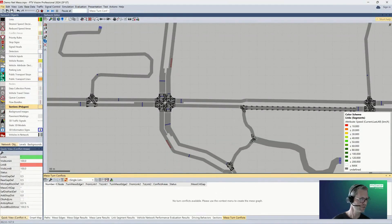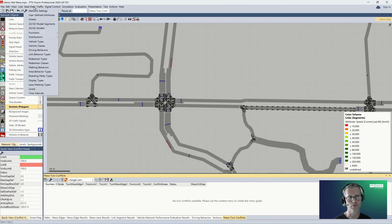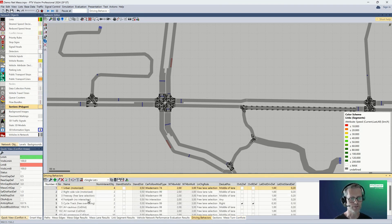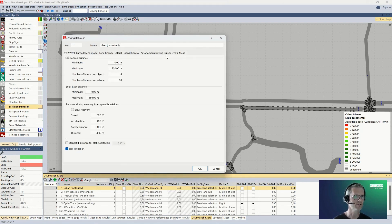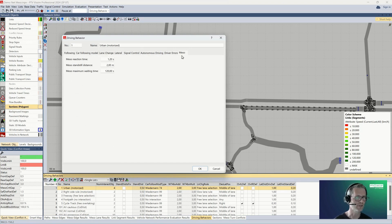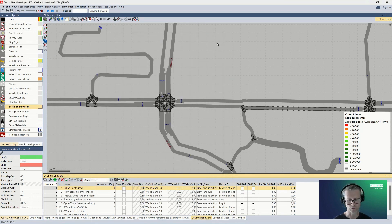Let me switch into VISSIM quickly and show you the driving behavior settings. If you go to base data and then to driving behaviors, it opens the list. When you double-click on the driving behavior you use in the model, you will find several tabs in the dialog. One of these is for meso, where you can find the meso reaction time and the meso standstill distance.